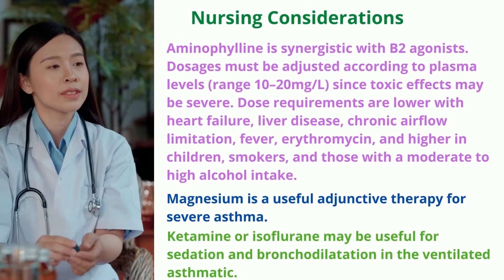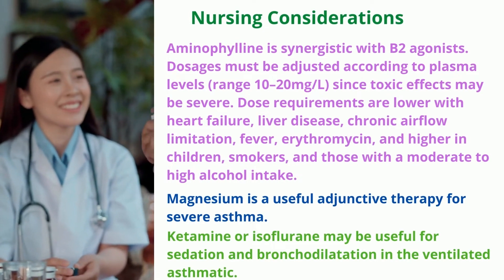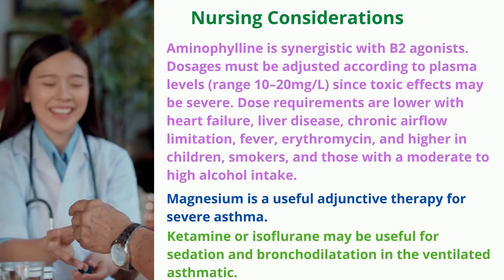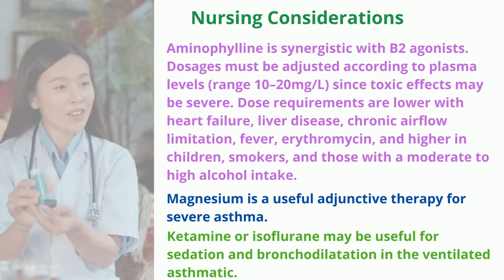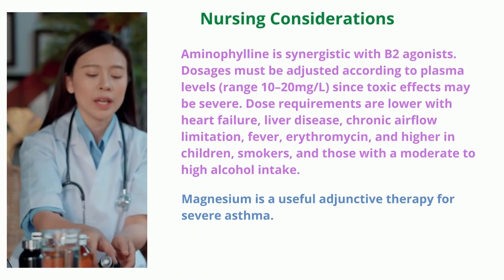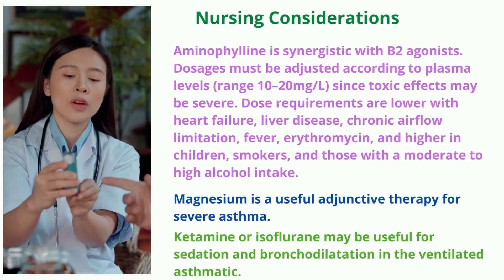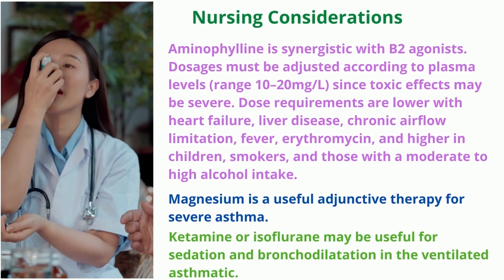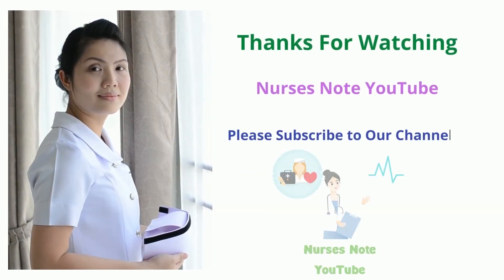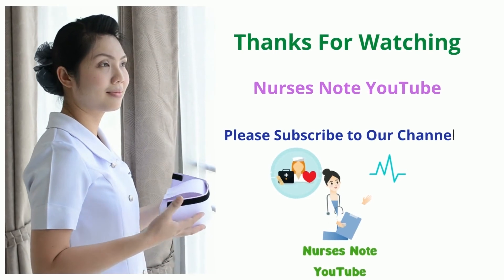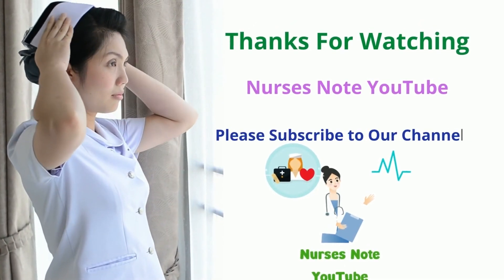Magnesium is a useful adjunctive therapy for severe asthma. Ketamine or isoflurane may be useful for sedation and bronchodilatation in the ventilated asthmatic.